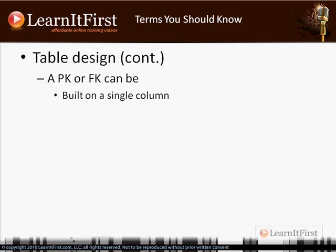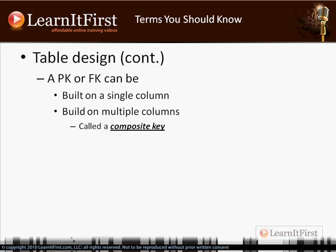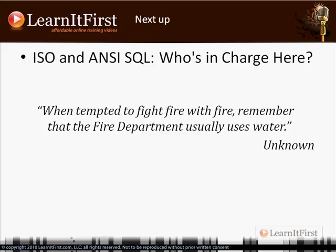When designing your primary keys and foreign keys, they can be built on a single column like a social security number, or on multiple columns like social security number, first name, last name, and birth date. When a key is built on multiple columns, we call that a composite key. It's simply a generic term that means the key is built on multiple columns.